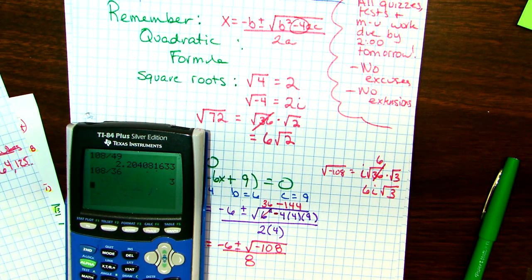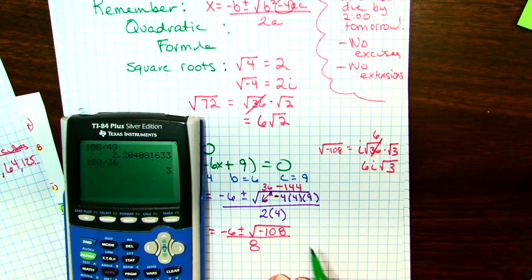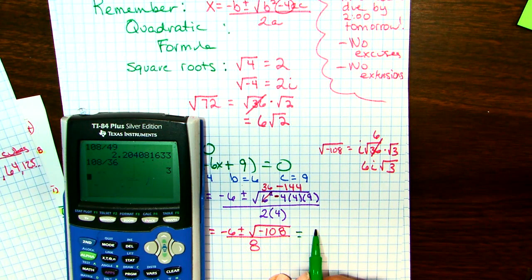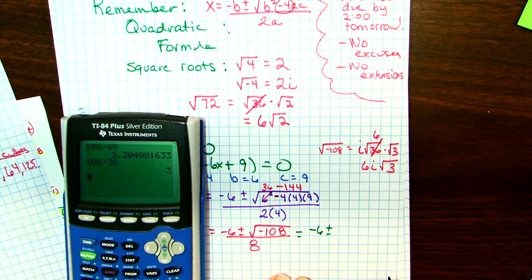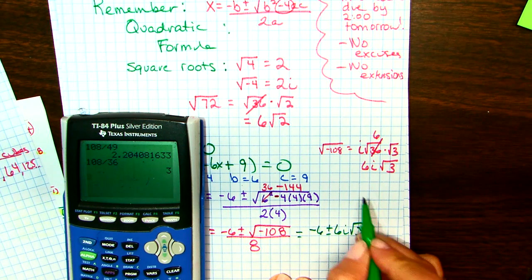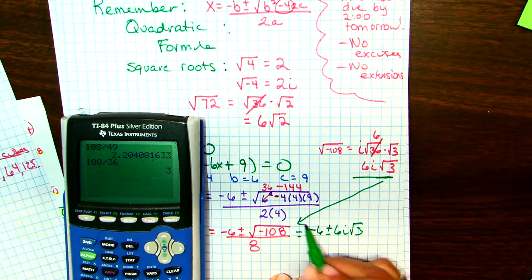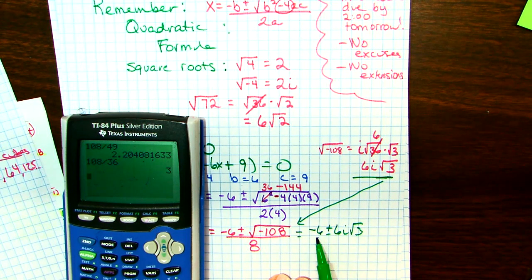36 times 3 is 108. The negative is right there. 36 comes out and becomes a 6. Hangs out with the i. Okay. So, if 108 were positive, it would just be 6 square root of 3. Since it's negative, it's 6i square root of 3. Don't be afraid of the negative. Almost done with this problem. So, I would have negative 6 plus or minus 6i square roots of 3, right? I just rewrote that right there. Over 8.